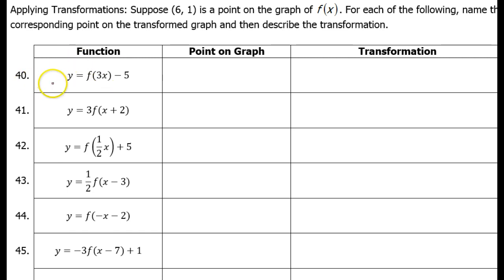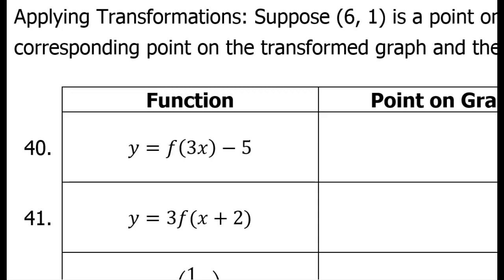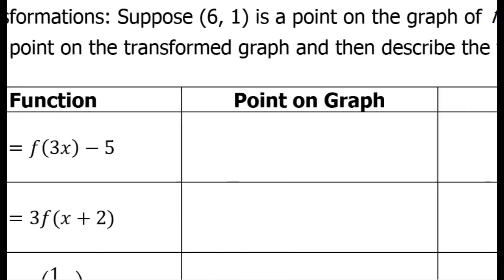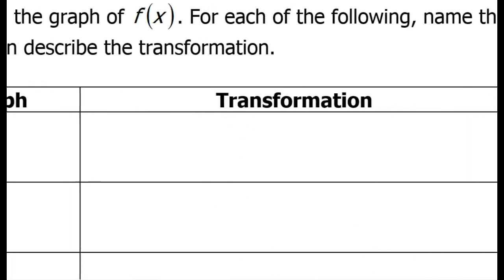Looking at number 40, we have two transformations. Anything inside the function is going to affect the x values, and anything outside the function is going to affect the y values. A 3 in the front would be a vertical stretch by a factor of 3, but a 3 inside the function is the opposite — horizontal and a compression. So this 3 represents a horizontal compression by a factor of 1 third.